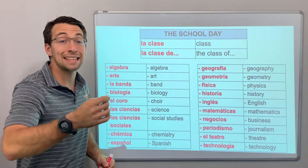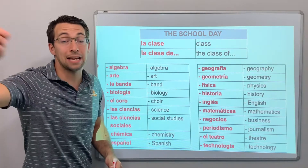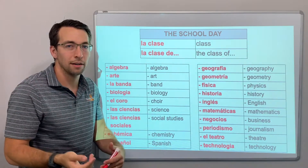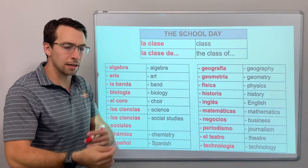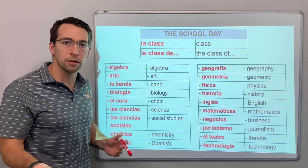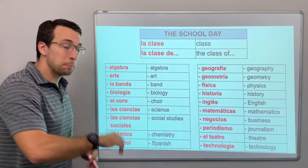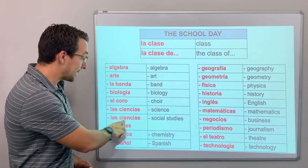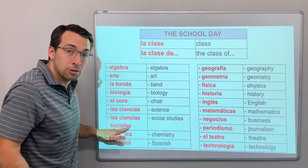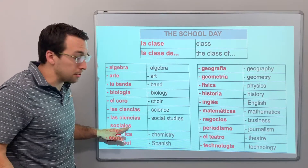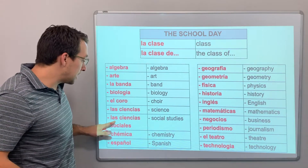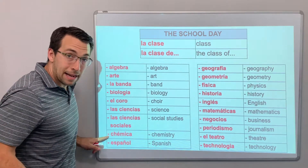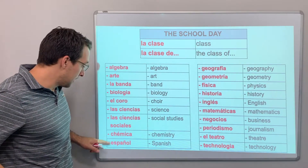Yo tengo la clase de las ciencias — a class of the sciences. If you're translating, still say 'science' in English, but in Spanish: las ciencias. Las ciencias sociales — social sciences, social studies. La química.